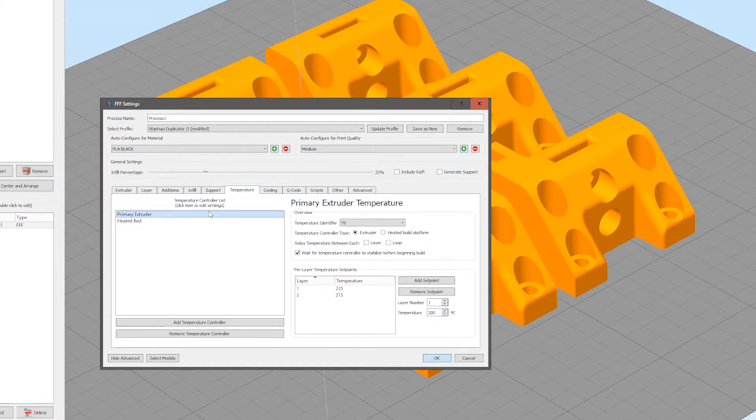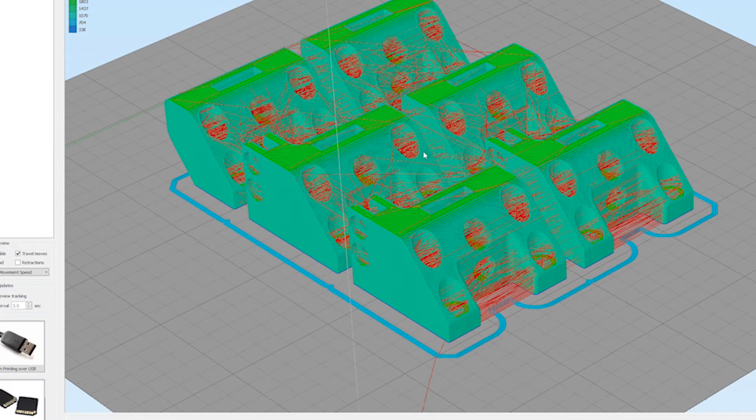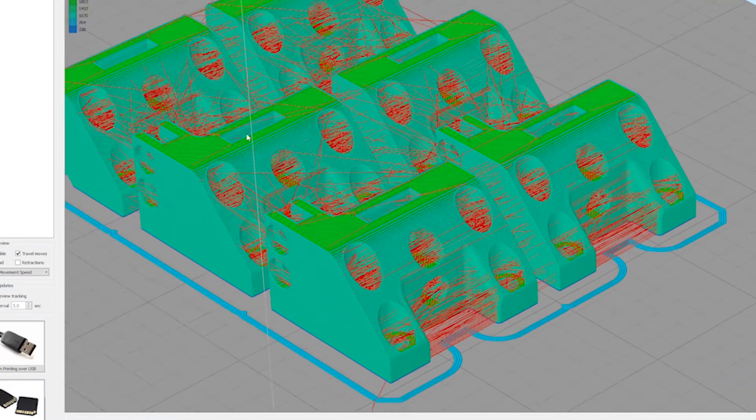An infill of 25% in a rectilinear pattern. I used four bottom layers, four top layers and three outside shells for additional strength and enough material for the mounting holes.